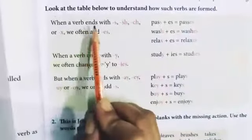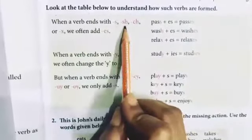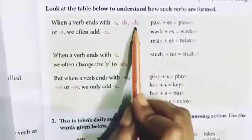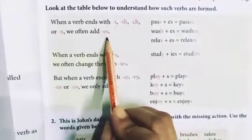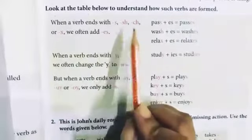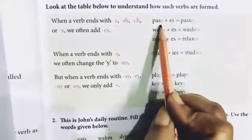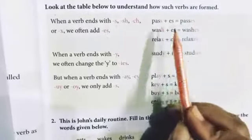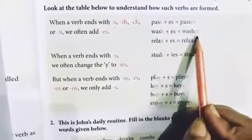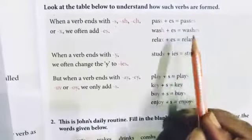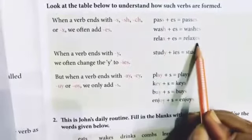When a verb ends with S, SH, CH, or X, we often add ES. Like: pass — double S — passes. Wash — SH — washes. Relax — X — relaxes.